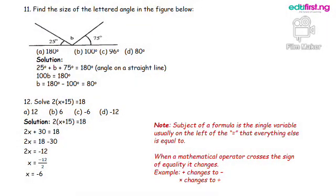Number 11: Find the size of the lettered angle in the figure below. Solution: Here we have angle on a straight line. And usually angle on a straight line is 180 degrees. So to get the number of the missing angle, we add the numbers of the given angle and subtract it from 180.